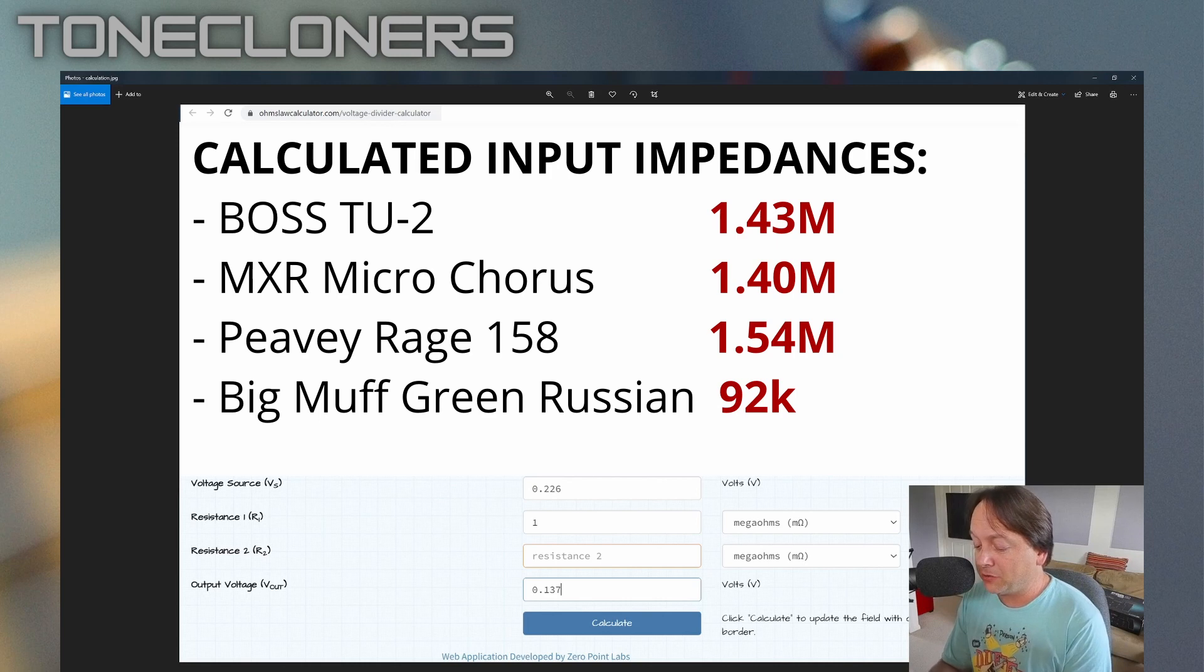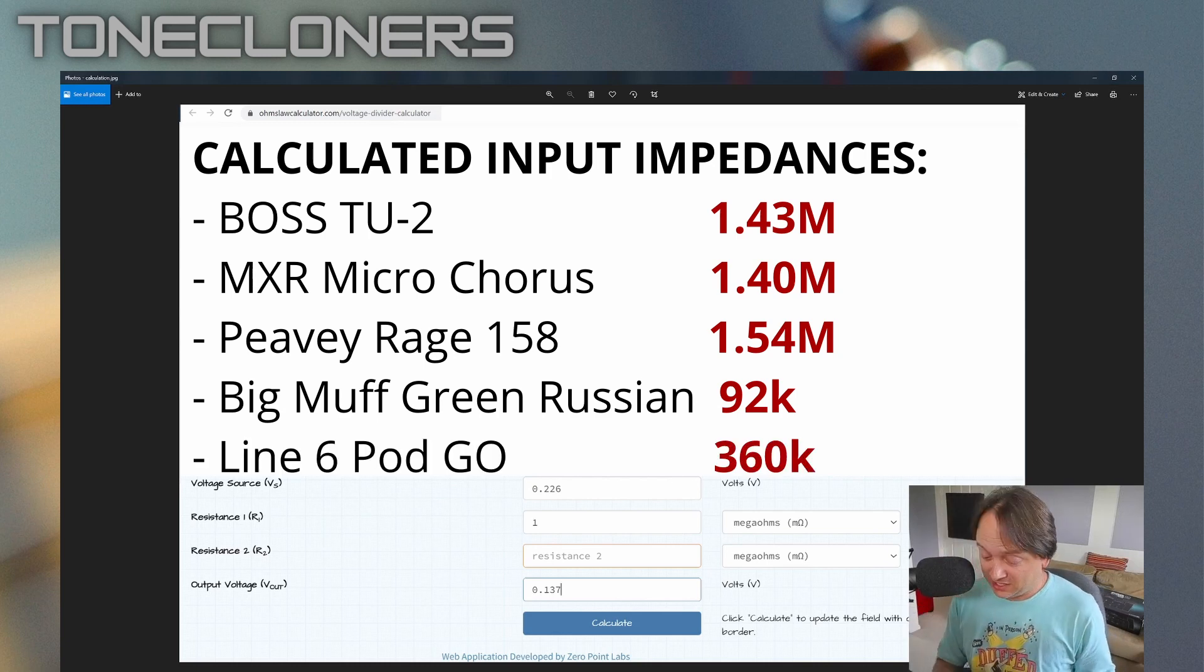And after all that, the impedance of the Pod Go came out as 360 kiloohms, 0.36 megaohms, a long way off the 1 megaohm that it's advertised at and definitely an explanation for the sound issues I've experienced.